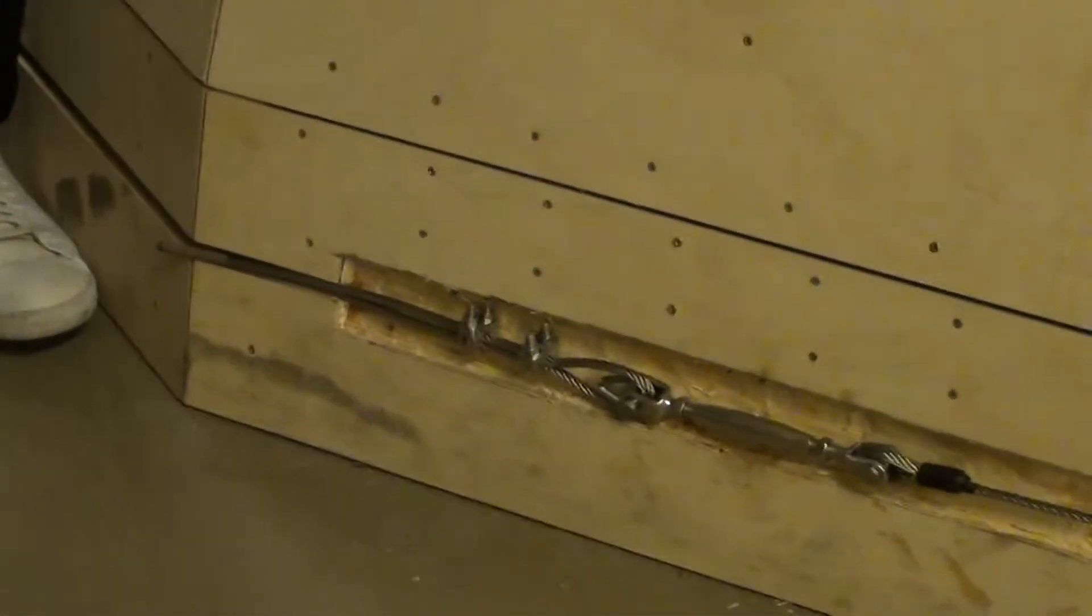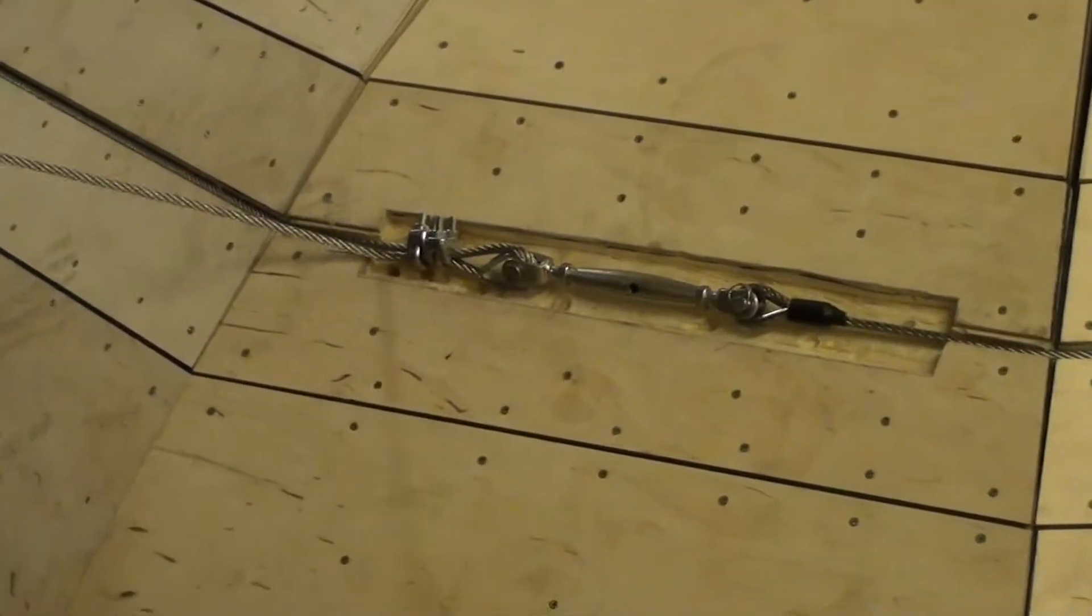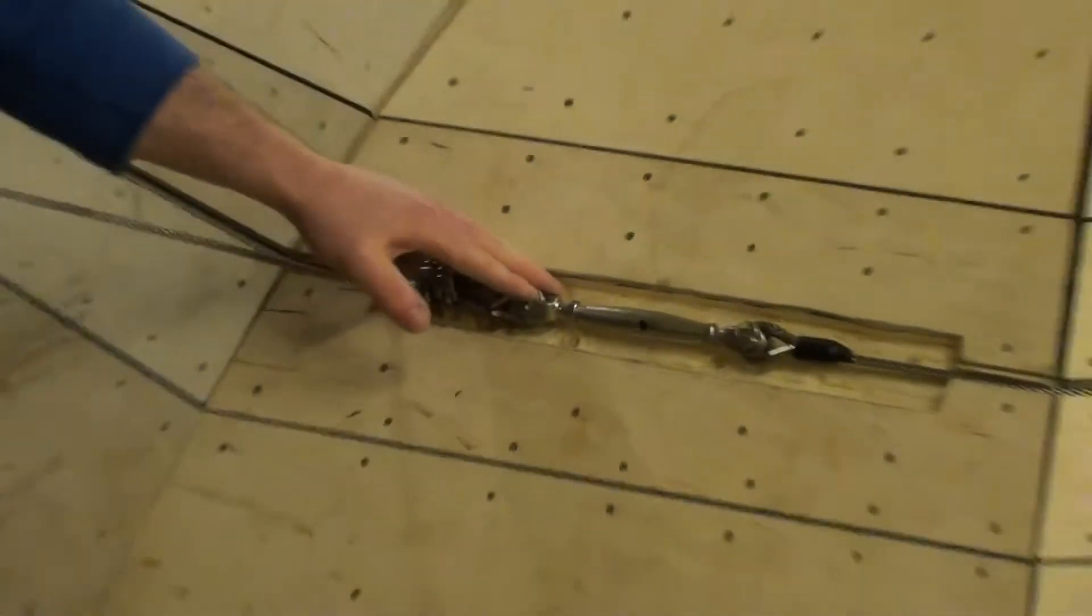So these are commonly seen as shrouds on sailing yachts and that sort of thing. Am I right in saying that? Yeah, they can be used on sailing yachts and they can also be used for balustrades, steel balustrades.